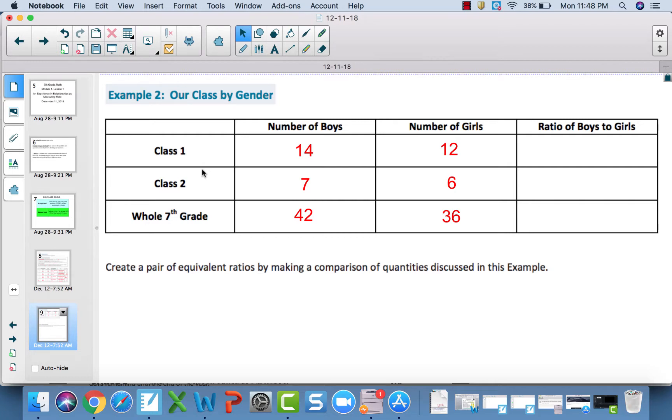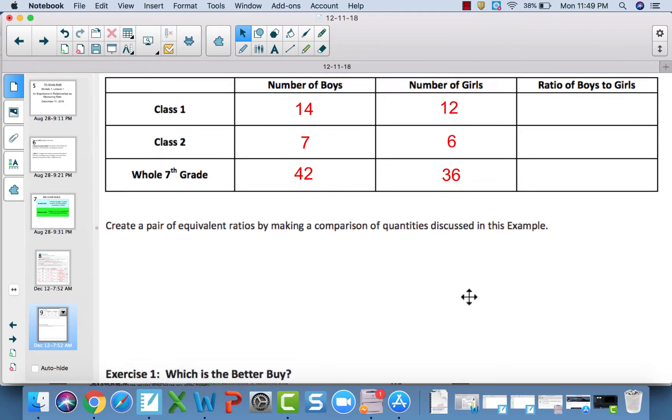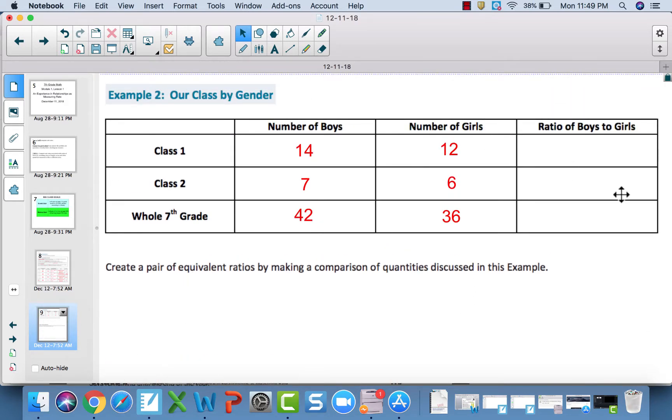Now, moving on. For example number two, we're going to assume we counted the number of boys and girls in seventh grade. Pause the video and fill out this table. Then you're going to write a ratio of boys to girls in each of these blanks. After that, you're going to create a pair - two equivalent ratios by making comparisons up here. For instance, if the ratio of boys to girls in class one is 14 to 12, you can create some kind of equivalent ratio that is equivalent to that ratio of 14 to 12. Please make sure it is clear what the ratio is equivalent to.